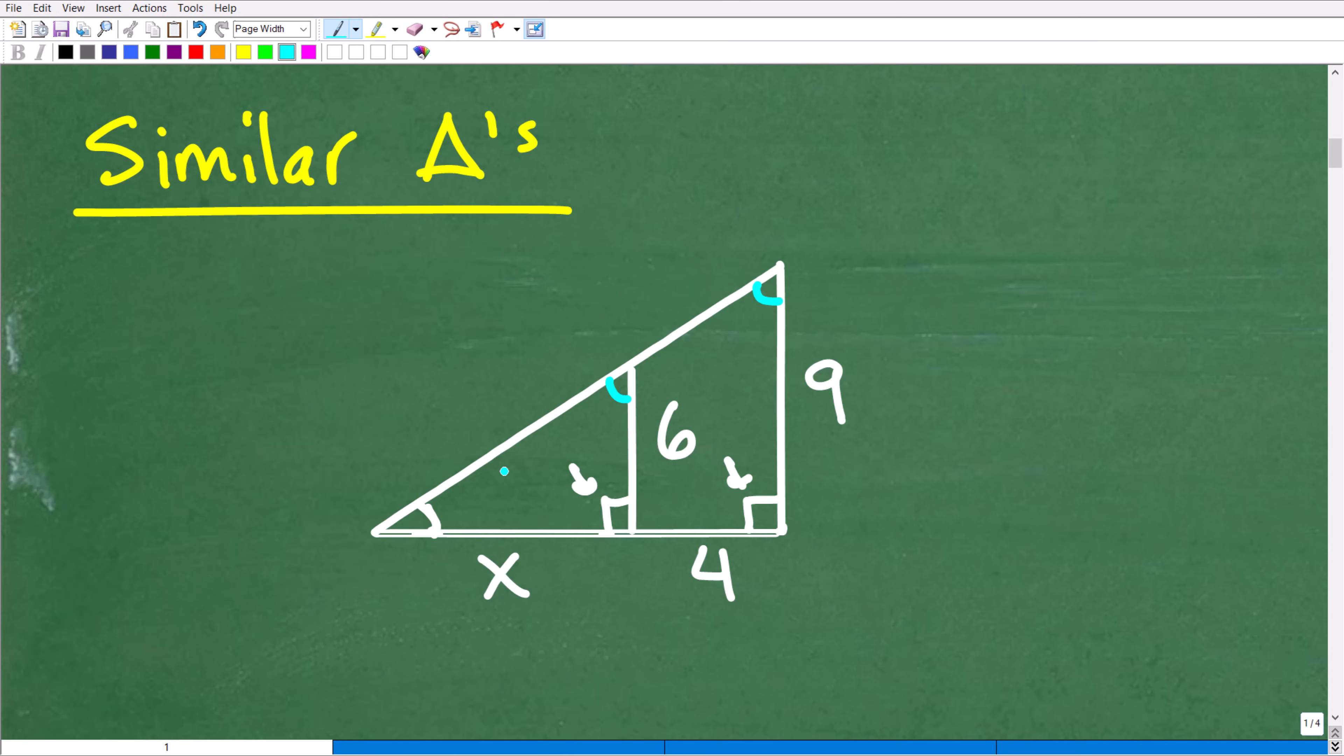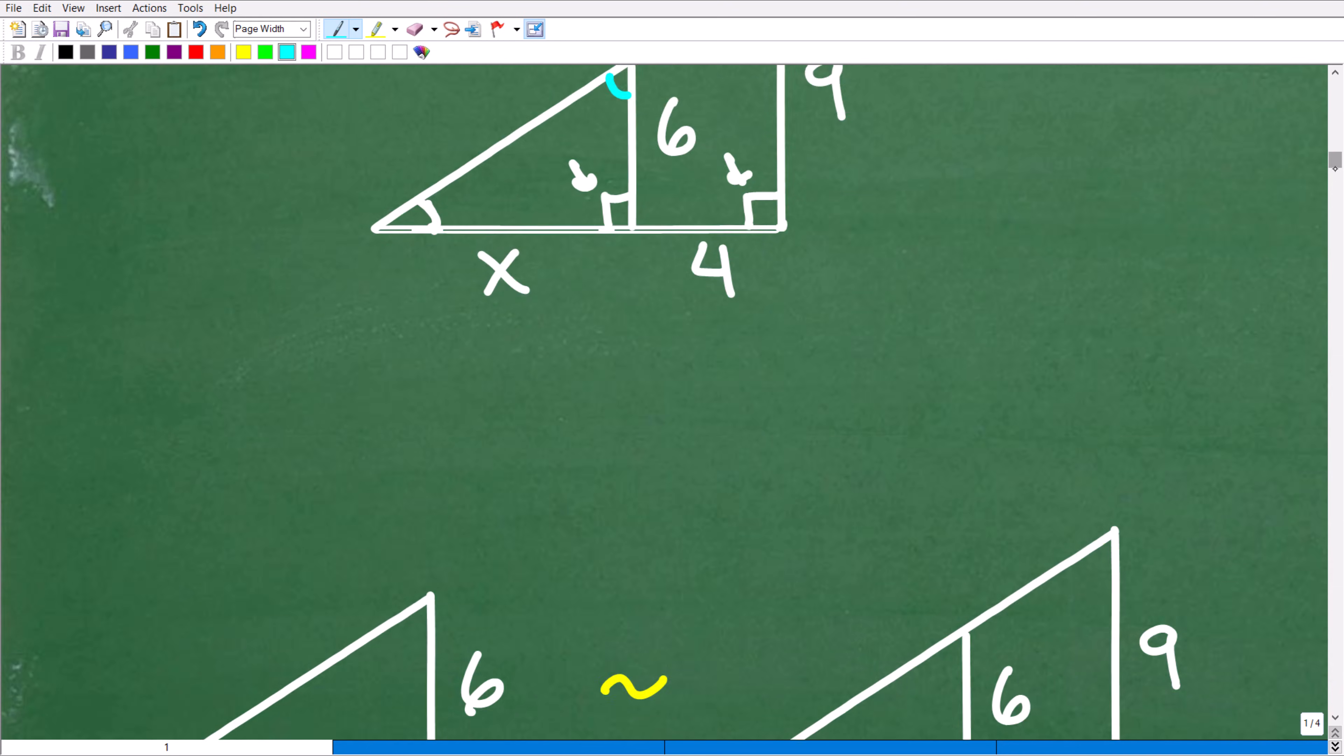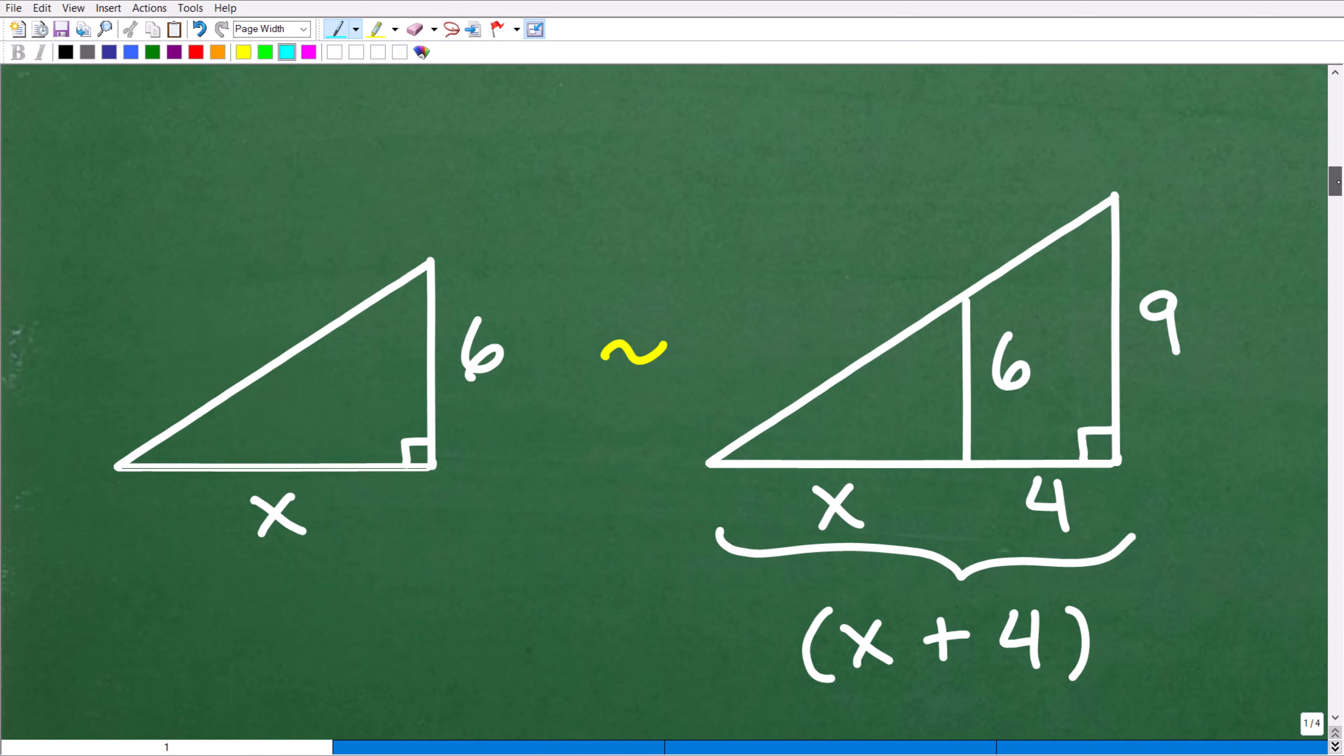What does that mean? Well, similar figures - their respective lengths are in proportion. Generally speaking, if you have two similar figures, what you need to remember is that their respective lengths are in proportion, and that's going to be the secret to unlocking the solution here. Let's take a look at the scenario this way.